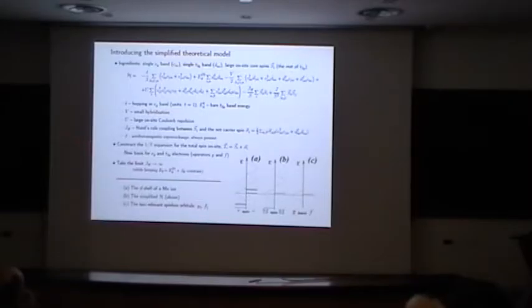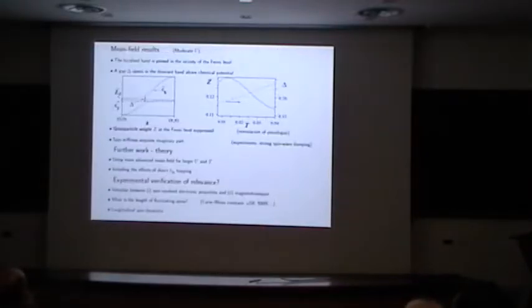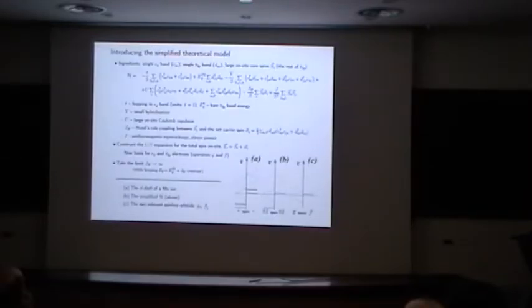Then I construct 1 over S expansion for the total spin on site, and go to a new spin quantization axis for the fermions. There is some transformation which you can find in my paper. And at this point, I can take the limiting case sending this down and sending this up. So I am left with one component of Eg band and one component of T2g band in the opposite spin channels.